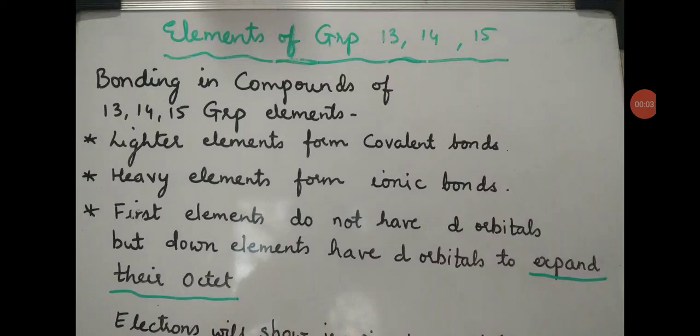This is the third video from the chapter Elements of Group 13, 14 and 15. Today the point we have to see is bonding in compounds of Group 13, 14 and 15 elements. This is page number 126 that we are studying. The point given is that lighter elements form covalent bonds and heavy elements form ionic bonds.